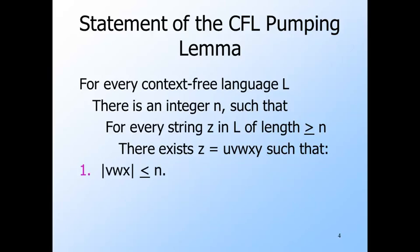The first constraint is that the middle three components, V, W, and X are short, no longer than the length N put together. Remember that V and X will get pumped, so that says not only are they short, but they appear within a bounded distance from each other within Z.